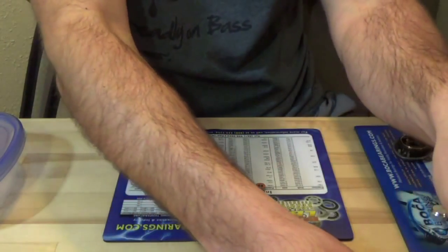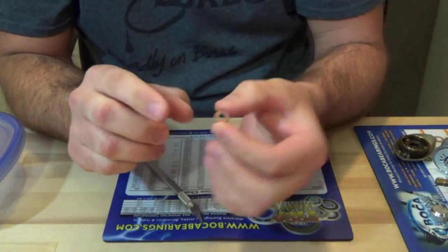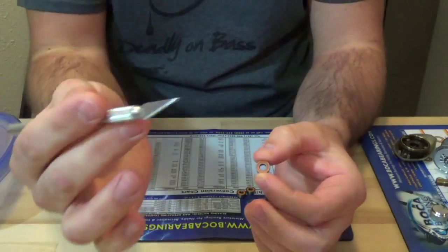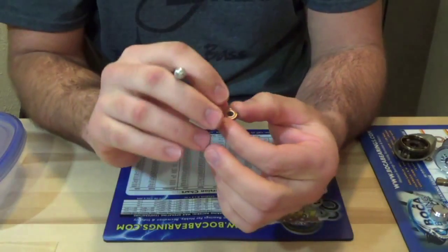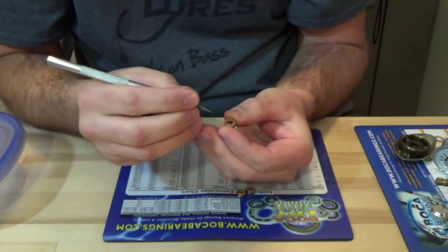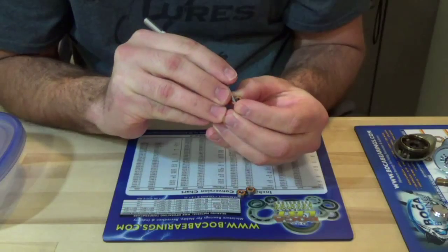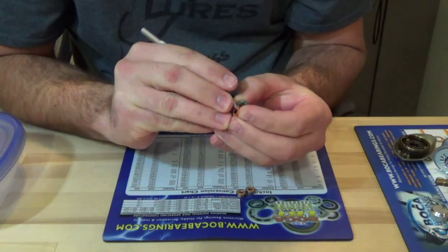So like I said, I'll show you guys the whole process, everything that I do. But the first thing you're going to do is take the seals out of the bearings. I'm just using an X-Acto knife. Just go towards the edge of the bearing and pop it out.